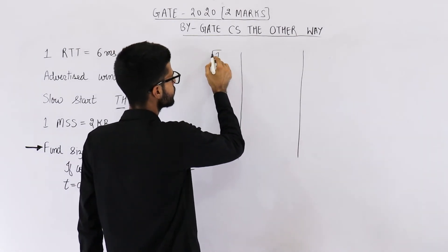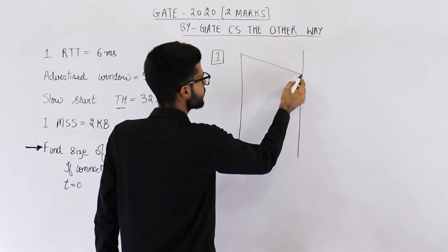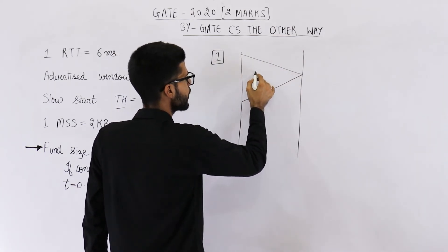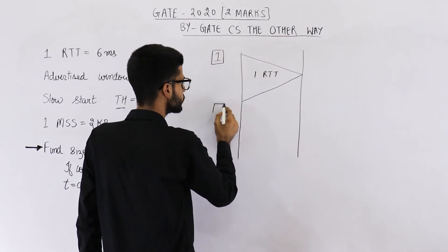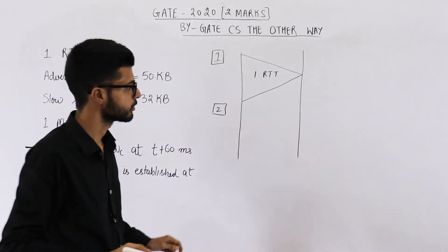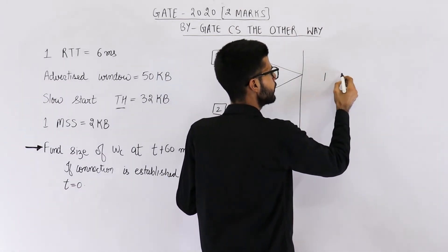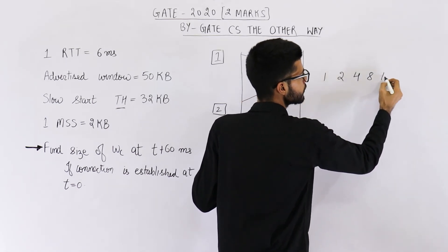Have a look. Initially, the window is of one packet or one MSS. After first RTT, its size will be 2. We have just doubled this size. So initially, we started from 1, then it doubled to 4, 8, 16, then 17, 18, 19, 20, 21.